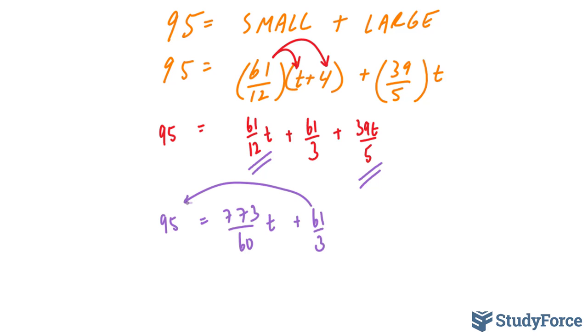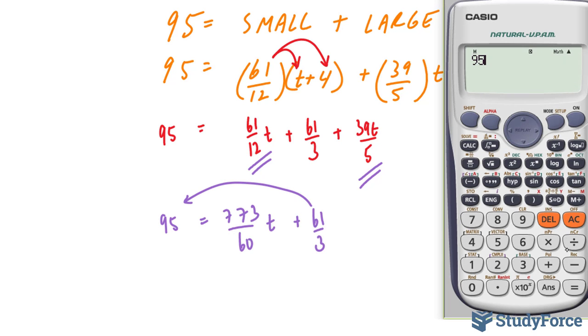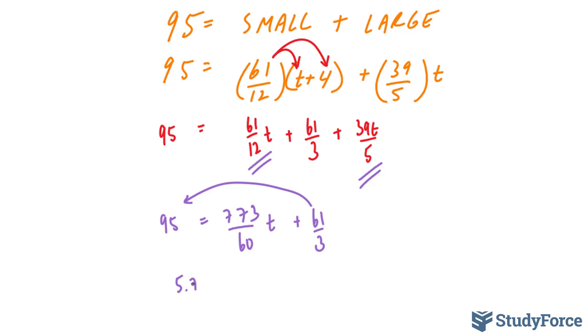Bringing this over to the left side, we end up with 95 subtracted 61 over 3. Dividing both sides now by this, divide that by 773 over 60, and we end up with 5.79 is equal to t.